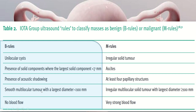The features of M rules include irregular solid tumor, ascites, at least 4 papillary structures, irregular multilocular solid tumor with the largest diameter of more than 100 mm, and very strong blood flow.